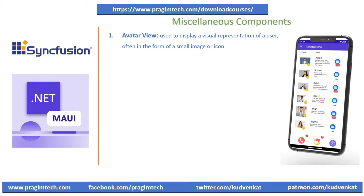An Avatar View is commonly used in applications to display a visual representation of a user, often in the form of a small icon or image. This component is widely used in social media, messaging applications, and user profile sections. The general purpose of an Avatar View component is to visually represent users in a recognizable and personal way. Avatar View Control is powered by a built-in parsing engine so it can generate initials based on the text provided. Using Avatar View, we can load custom images using the image source. The MAUI Avatar View Control is loaded with 30 predefined vector images to use as a profile image.